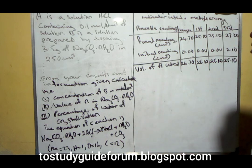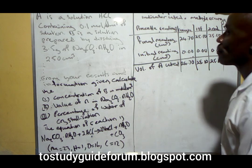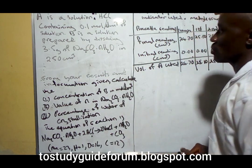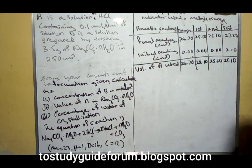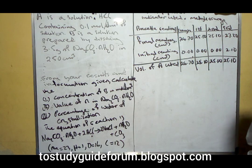We have a question on the board. The question states that A is a solution of hydrochloric acid containing one mole per dm³ of solution.